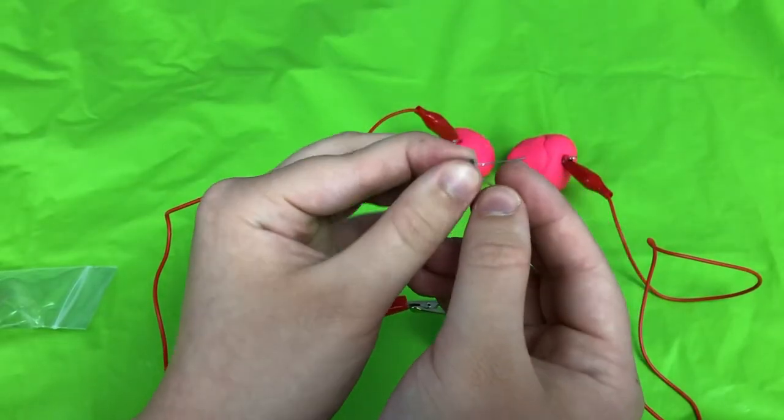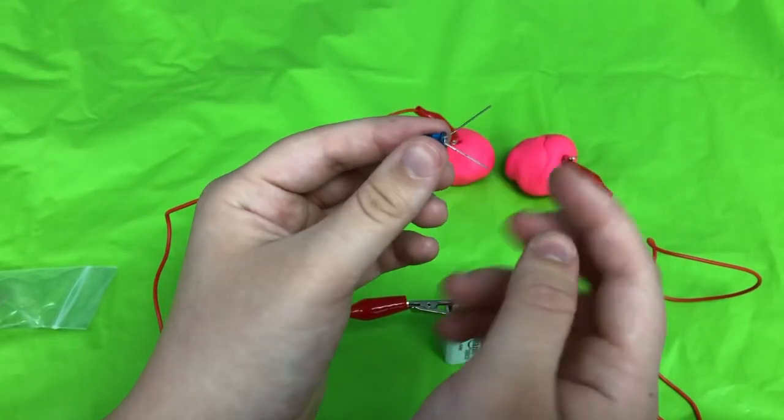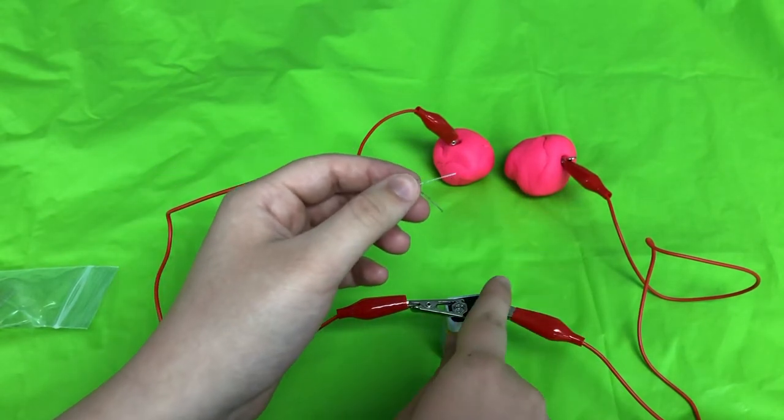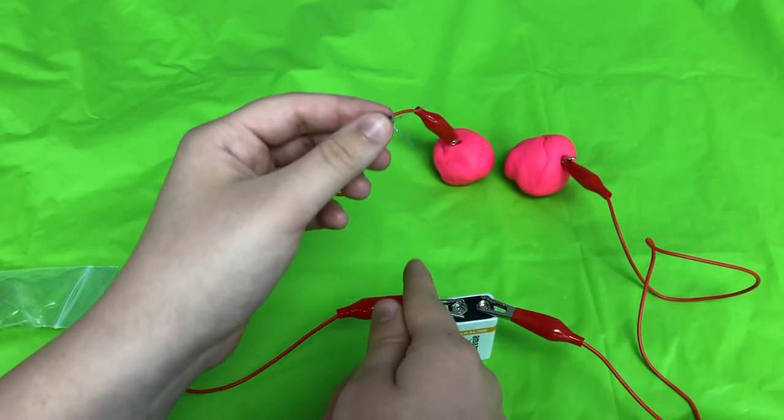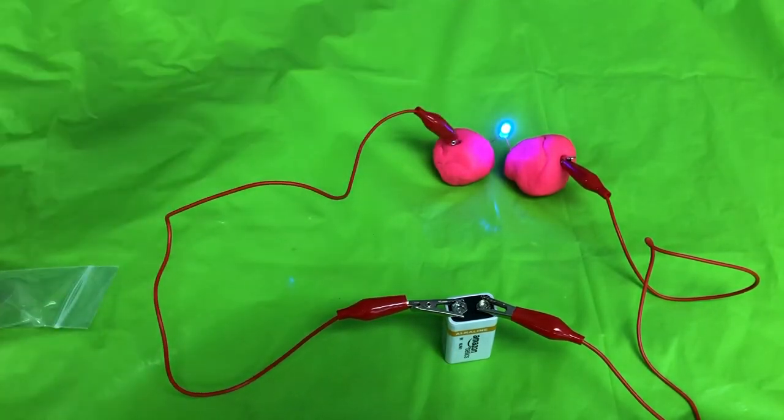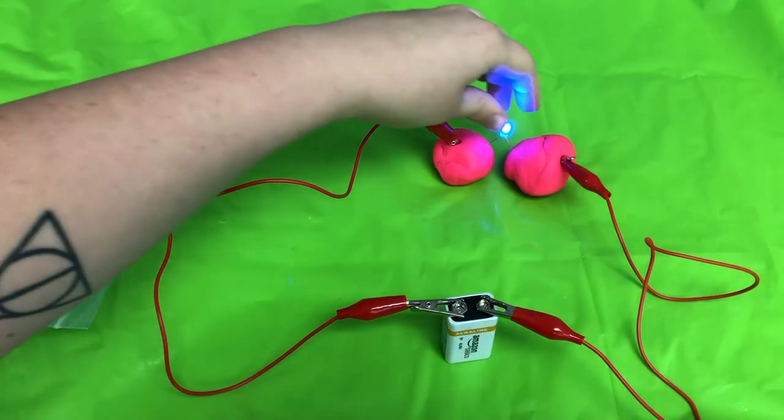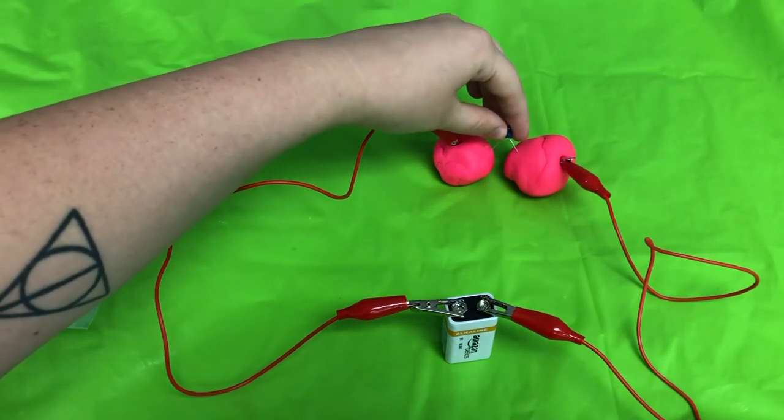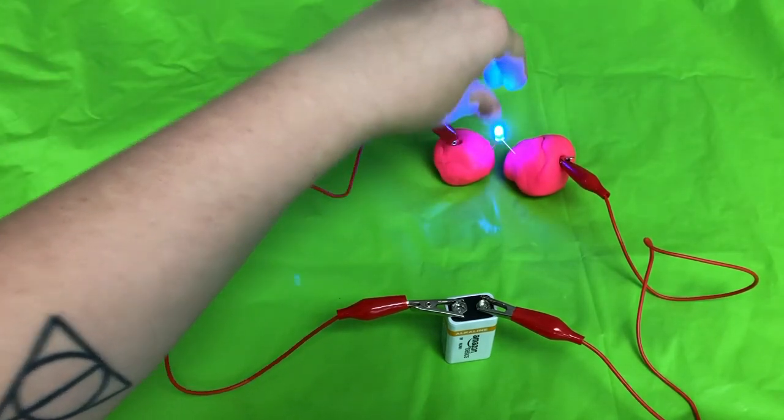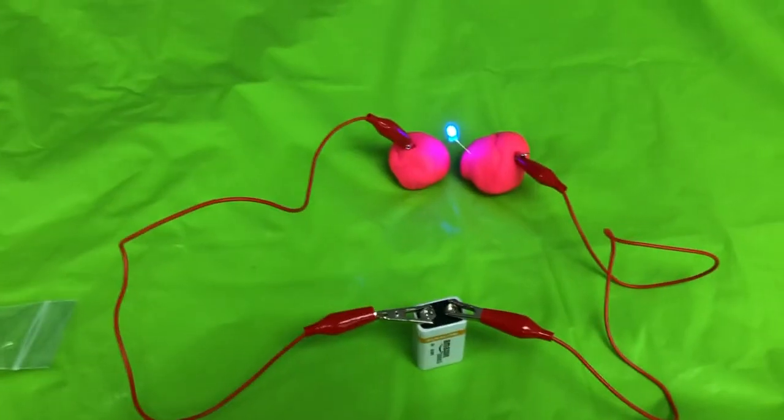I'm just going to spread it apart into a V shape and then I'm going to put my positive side on the positive side of the battery with the alligator clip and the negative side to the negative alligator clip. And then you can see when it is touching both of the Play-Doh balls then the light will come on. Now it's okay if it doesn't work at first. If you put it into the Play-Doh balls and the light doesn't turn on that just means that you need to flip it around. So now we have our light.